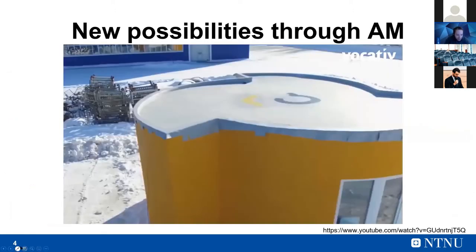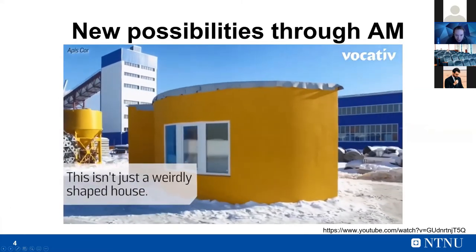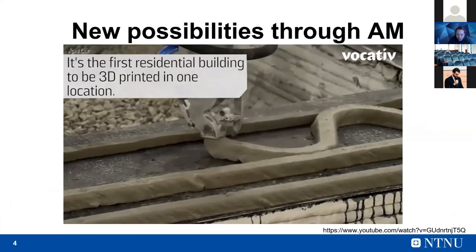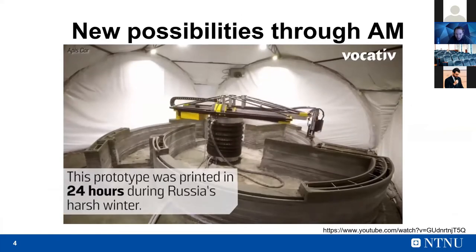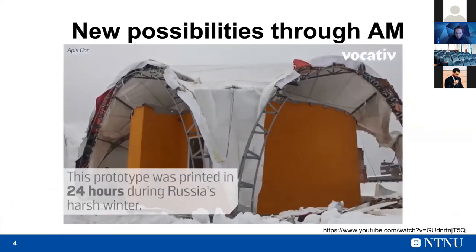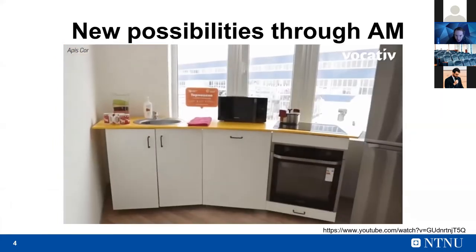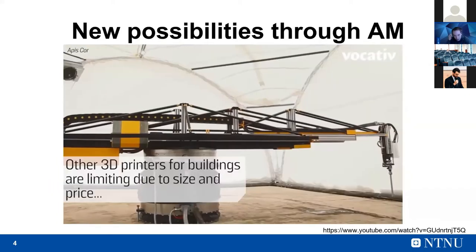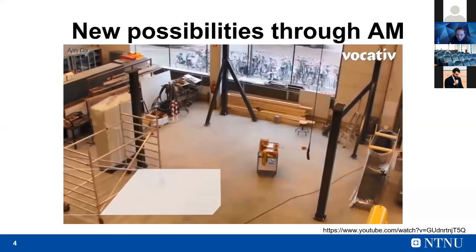Here you can see a house being built. This is one of these logistically attractive approaches where the printer itself is smaller than the house — you can easily transport it and build on site. This is a Russian company already in business, and in China there is a large-scale approach building houses on site using a kind of FDM of concrete.